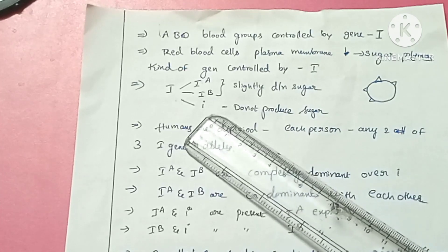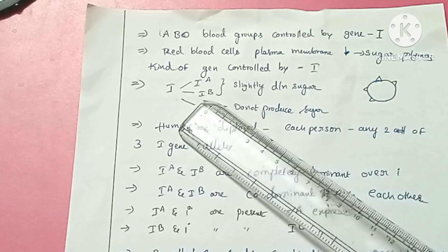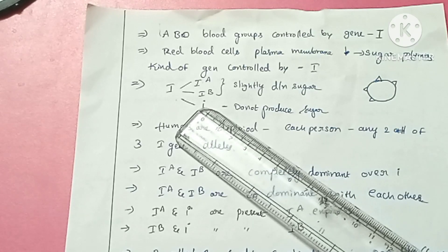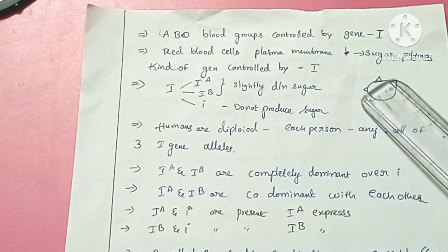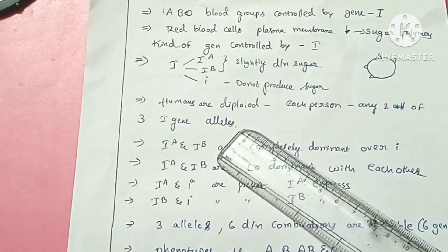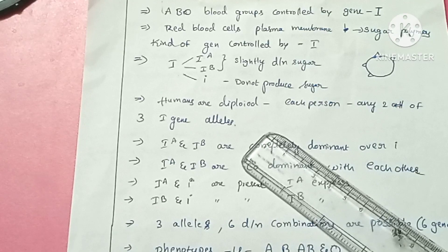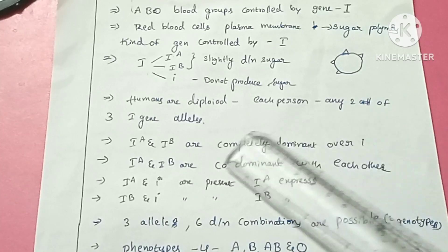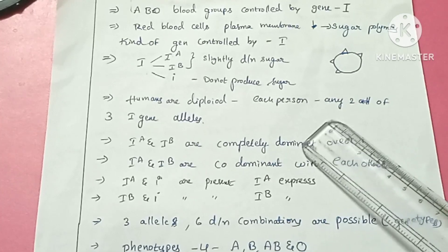The I gene has three alleles: IA, IB, and small i. IA and IB produce slightly different sugars on their plasma membrane, while small i does not produce any sugar. Although there are three alleles, human beings are diploid organisms, so every person has only two alleles present out of these three.